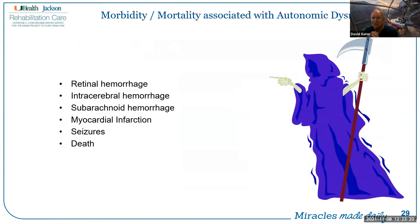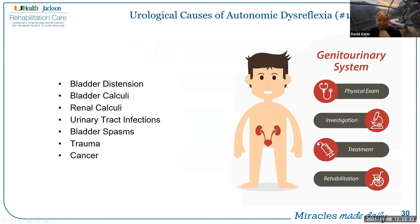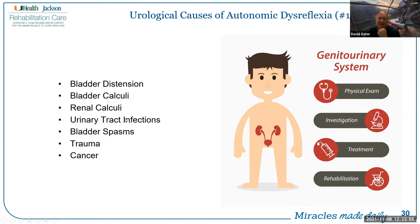Significant morbidity and mortality associated with autonomic dysreflexia can include retinal hemorrhages, intracerebral hemorrhages, subarachnoid hemorrhages, myocardial infarction, seizures, organ failure, and death. The number-one cause of autonomic dysreflexia in a person with spinal cord injury is urological — related to the bladder. Bladder distension, bladder calculi, renal calculi, urinary tract infections, bladder spasms, trauma, and cancer are all triggers. These folks are relatively insensate, so they won't feel where the noxious stimulus is coming from — instead it drives them into a hypertensive crisis.